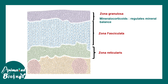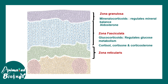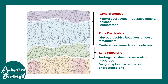Zona granulosa gives rise to mineralocorticoids, which regulate mineral balance — such as aldosterone. Zona fasciculata is the region that gives rise to glucocorticoids, meaning cortisol, which regulates glucose metabolism and stress. Cortisol, cortisone, and corticosterone are the main glucocorticoids. Zona reticularis gives rise to androgens responsible for secondary sexual characteristics.